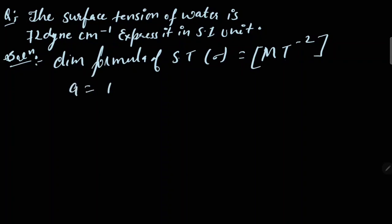From here we will get the value of a which is 1 and value of b which is equal to -2. Now in CGS system of units, n1 is given to us which is 72, m1 is given to us which is 1 gram, l1 is 1 centimeter, and t1 is 1 second.